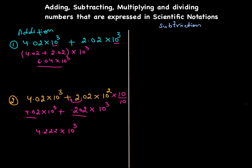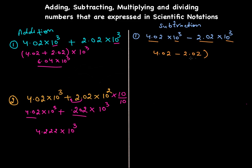Now let's do subtraction using the same numbers. First problem: 4.02 × 10³ minus 2.02 × 10³. The powers of ten are the same, so we just subtract: 4.02 − 2.02 = 2.00, giving us 2 × 10³.